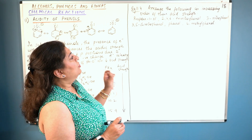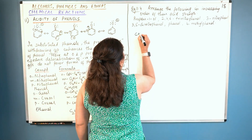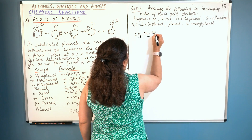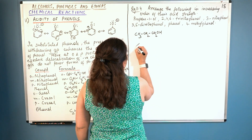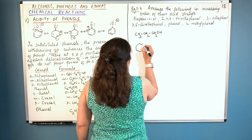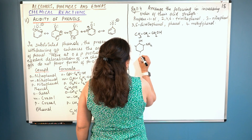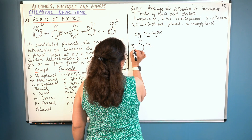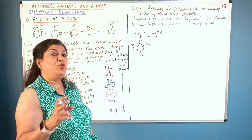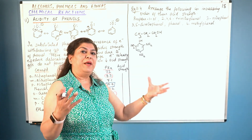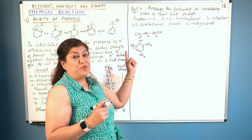Arrange the following in increasing order of their acid strength. First is propane-1-ol: CH₃CH₂CH₂OH. Second is 2,4,6-trinitrophenol — nitro is electron withdrawing, and all three substituents are at the ortho (two positions) and para position, so this is going to be a really strong acid. Third is 3-nitrophenol, where the nitro group is at the third carbon, which is the meta position.